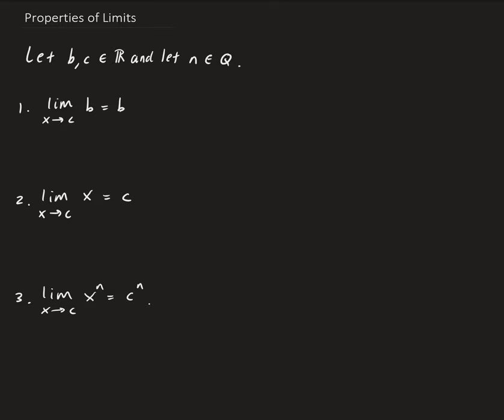For example, like one half, minus three halves. Even the integers are considered to be rational because you can divide an integer by one, and therefore it's in rational form.